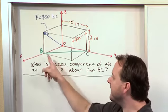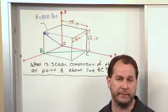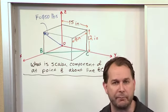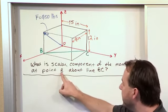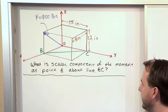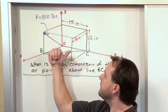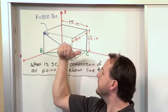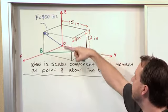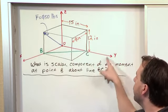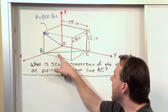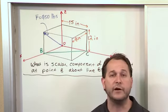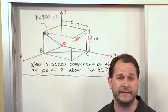But the problem isn't just asking us what is the moment developed at point B. That would be an earlier type of problem. What it's asking is what is the component of the moment at point B about the line BC. So clearly if I see the box is rotating like this, then the box is tending to do something like this purely in the Y direction. But we want to find out what is the component of that moment that lies along this arbitrary line defined by BC.